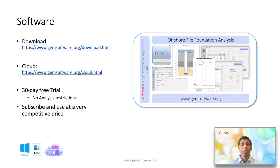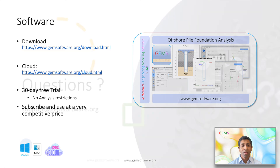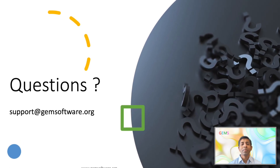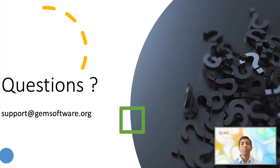The software is available for a 30-day trial download from our website for Windows and Mac. One can also try the online cloud version for 30 days from our website using a browser. There are no analysis restrictions on the trial version. After the trial period, one can subscribe and continue using it for a very competitive price. Do visit our website for additional details. Download the trial version or sign up for the cloud version and try it out for yourself. The software is very intuitive and easy to use. You can also watch the quick start guides from this YouTube channel if you need help getting started. There are also some example problems available for download, and the links are summarized below in this video. If you have any queries, please email us at support@gemsoftware.org. Like this video, share with others, and subscribe to this channel to stay up to date. Thank you for watching.